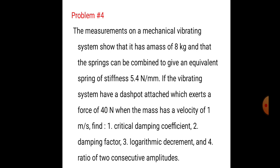Find: first, the critical damping coefficient; second, the damping factor; third, the logarithmic decrement; and fourth, the ratio of two consecutive amplitudes. Given: mass m = 8 kg, equivalent spring stiffness k = 5.4 Newton per mm, dashpot force F = 40 Newton, velocity = 1 meter per second. We have to find: critical damping coefficient cc, damping factor, logarithmic decrement delta, and the ratio x1/x2.